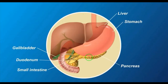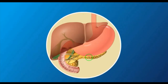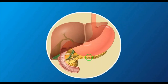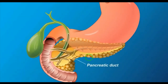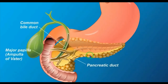The pancreas is 6 cm long and 2 inches wide. It has ducts — the pancreatic duct and common bile duct. See, this is the pancreatic duct and this is the common bile duct.